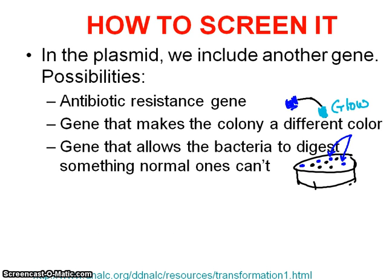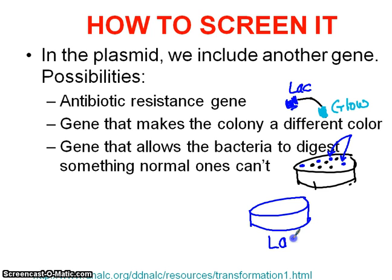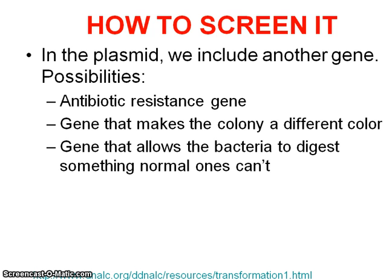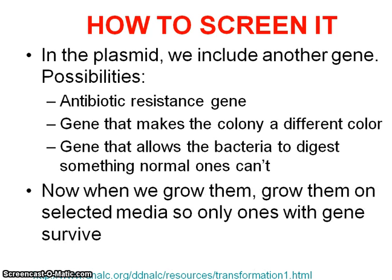A third way we can do this is include a plasmid that lets them digest something they can't normally digest. For example, we could include the lac gene, which lets them digest lactose. Then we put them on a plate where the only food available is lactose. The only bacteria that are going to grow are the ones that have picked up our plasmid, because they will have the ability to digest lactose in addition to the ability to glow. These are ways we can screen our bacteria to make sure only the ones we want are the ones that grow.